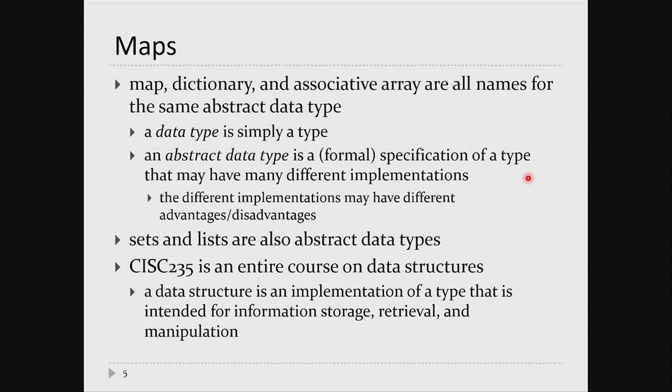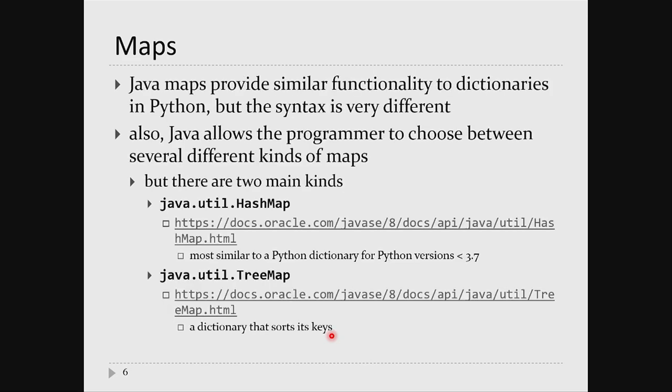Because it's a mathematical description of a type, you can have many different implementations of that type. You can cook up many different ways to implement a list, and the different implementations have different advantages and disadvantages. So you can produce many types of lists or sets and choose the one most appropriate for your application. Sets and lists are also abstract data types. SYS 235 is an entire course on data structures — a data structure is an implementation of an abstract data type designed for information storage, retrieval, and manipulation.